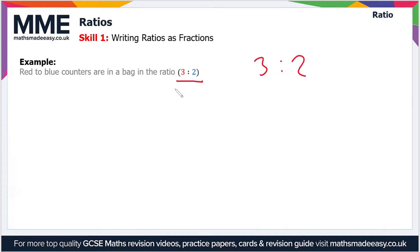Now when we write a ratio as a fraction, we can either write each part as a fraction of the other part, or we can write a part as a fraction of the total number of parts. So let's start off with writing one part as a fraction of the other.